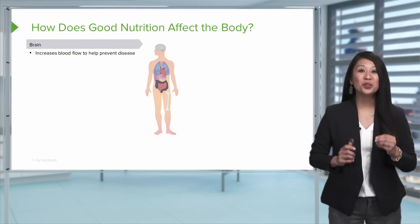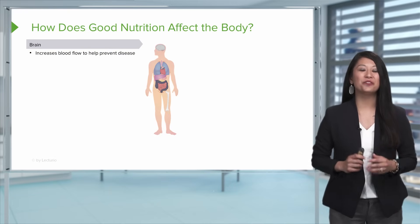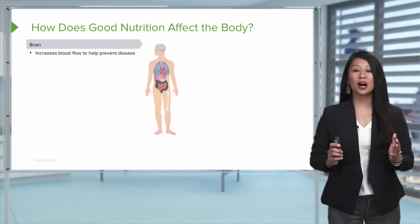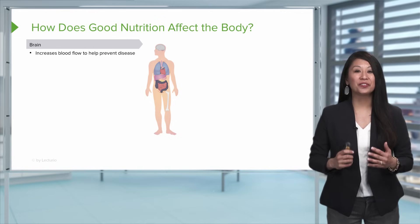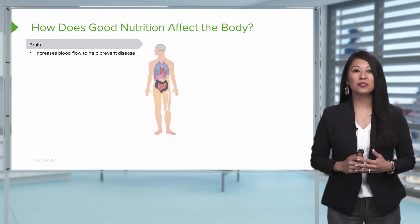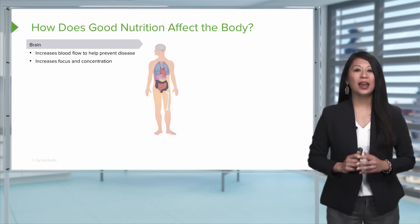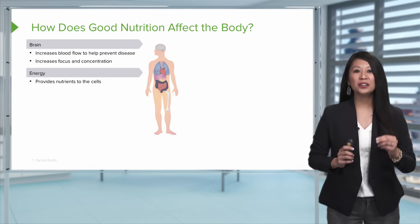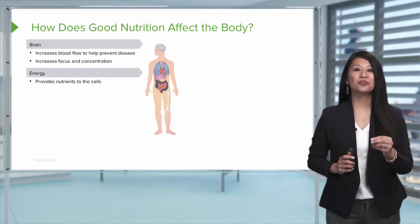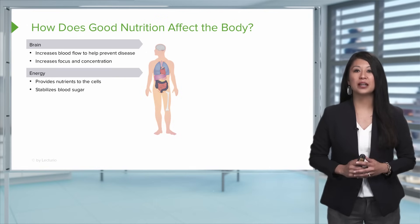Let's start off by talking about what good nutrition does to affect the body. First off, it helps increase blood flow to prevent disease, increases blood flow to our brain, increases that focus and concentration, and provides great nutrients to the cells to provide energy and help stabilize our blood sugar.